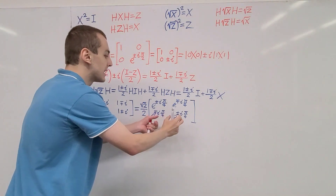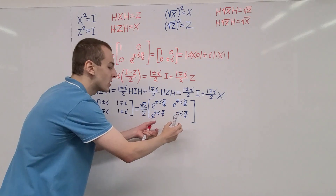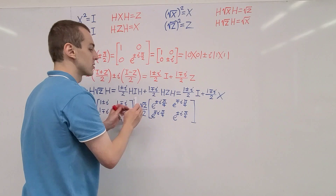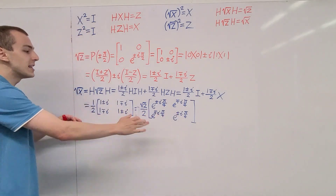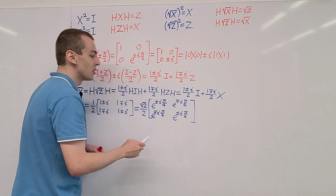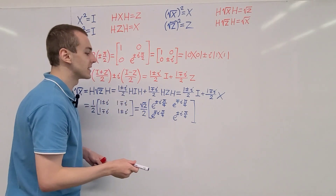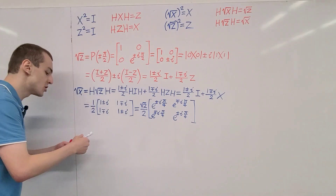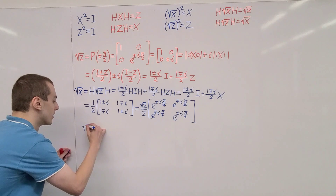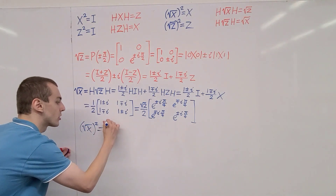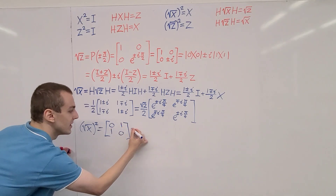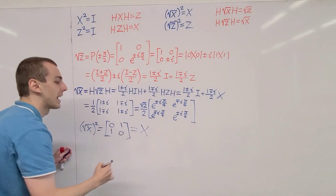So there are different ways to write the square root of X gate, and notice that there are two possible cases — a plus case and a minus case — both of which satisfy the defining property. If you take this matrix and square it, you will get the matrix representation with entries 0, 1, 1, 0, which is equivalent to the Pauli X gate.